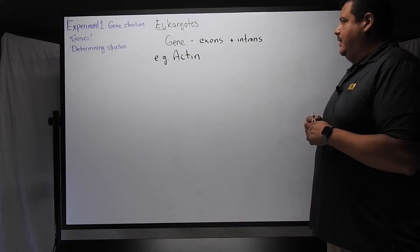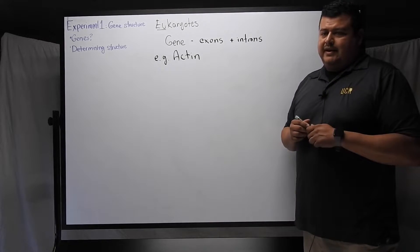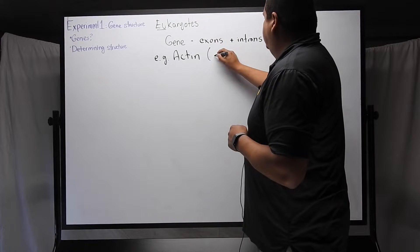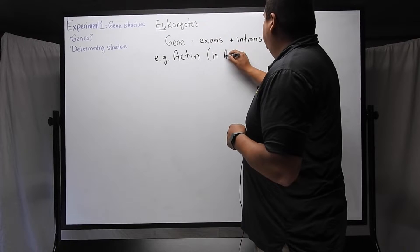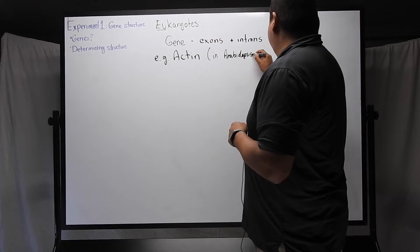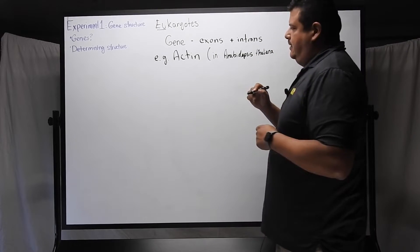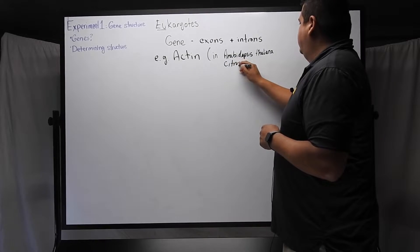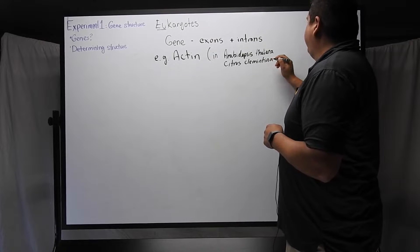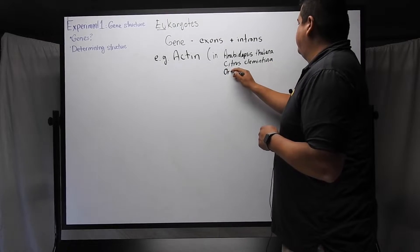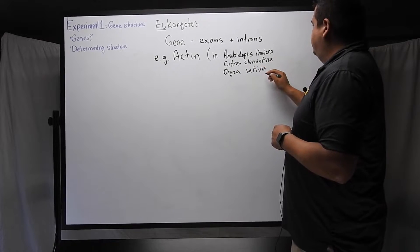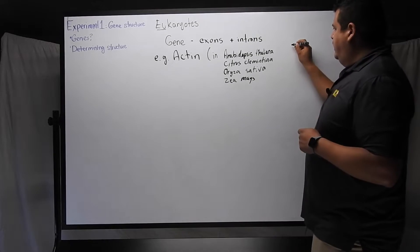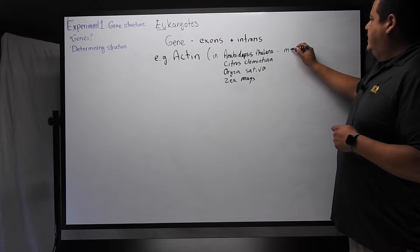Here we're just using as an example because it's commonly found in virtually every living organism. This actin makes for a good model. And in experiment one, we're going to look at the actin gene structure in four different plants.